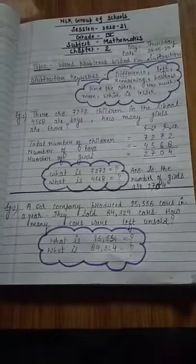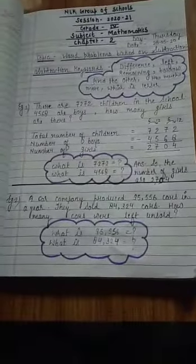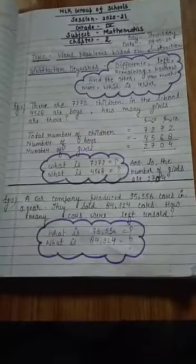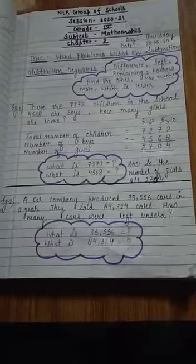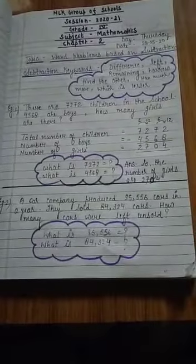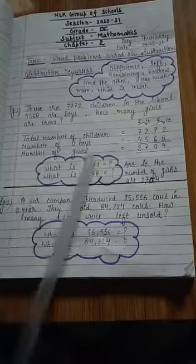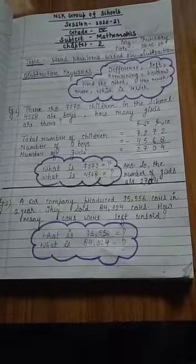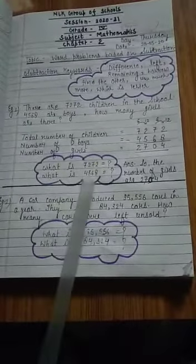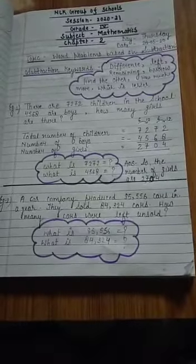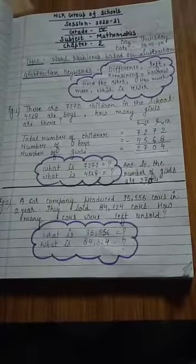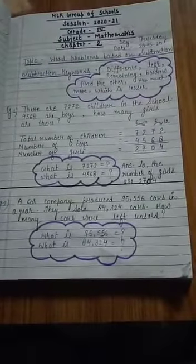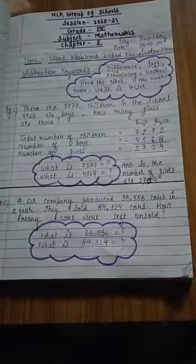So children, read the question carefully. Now to understand the problem well and to know what to write as statements, ask these questions: What is 7,272 and what is 4,568? The answer to these questions will help us to form statements for the solution.